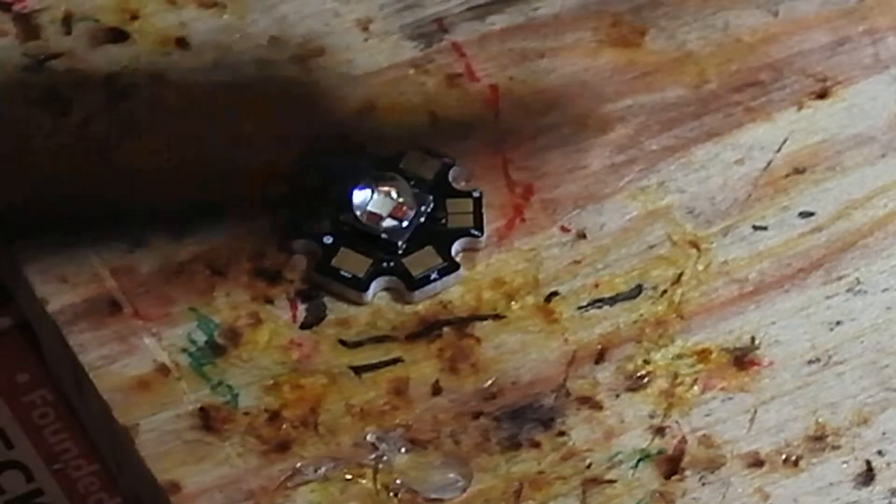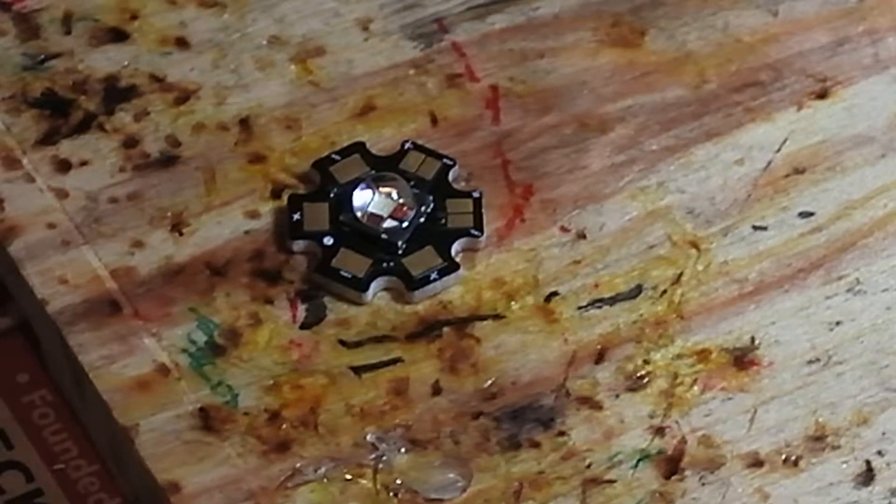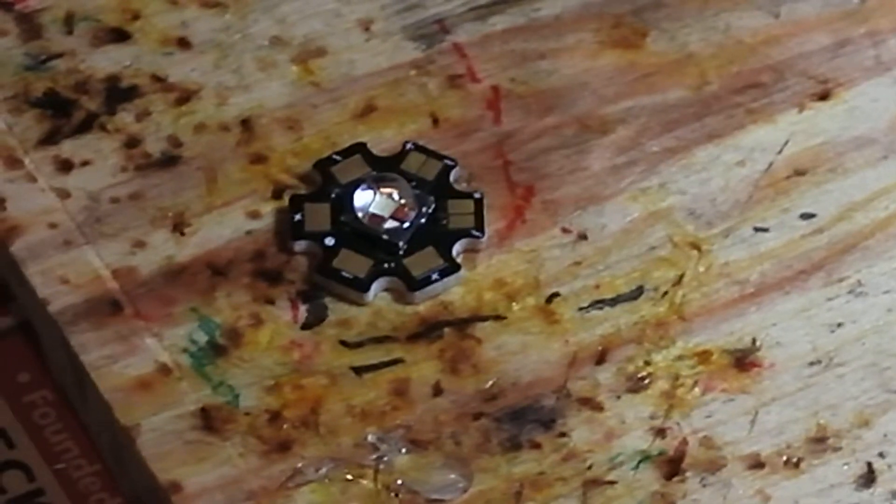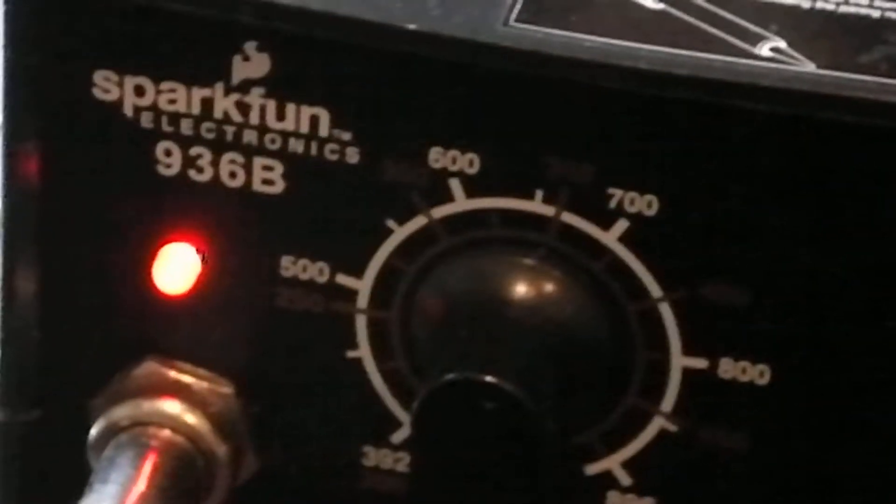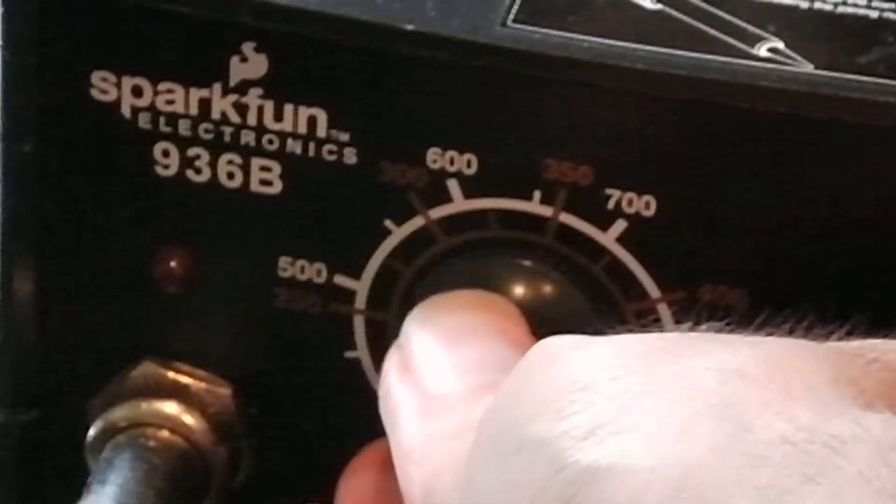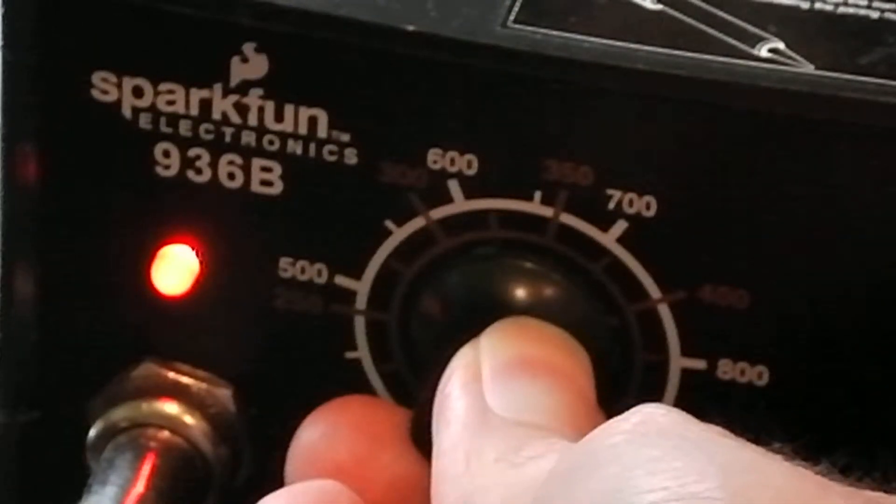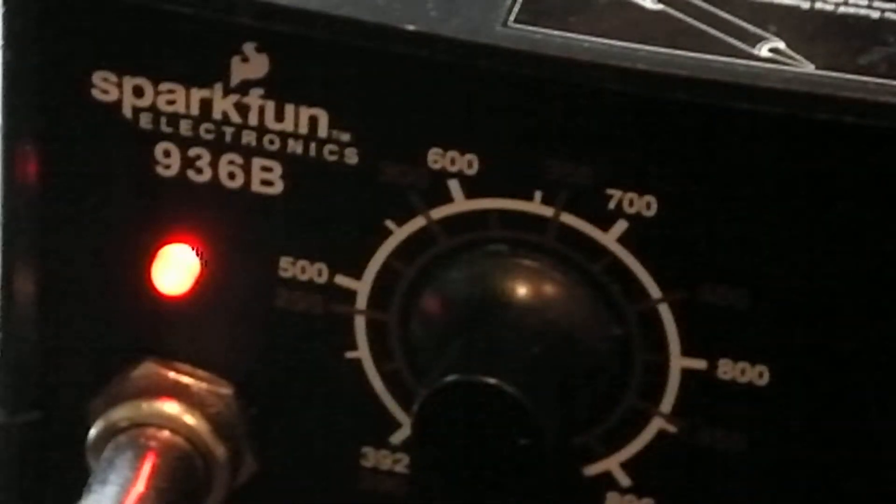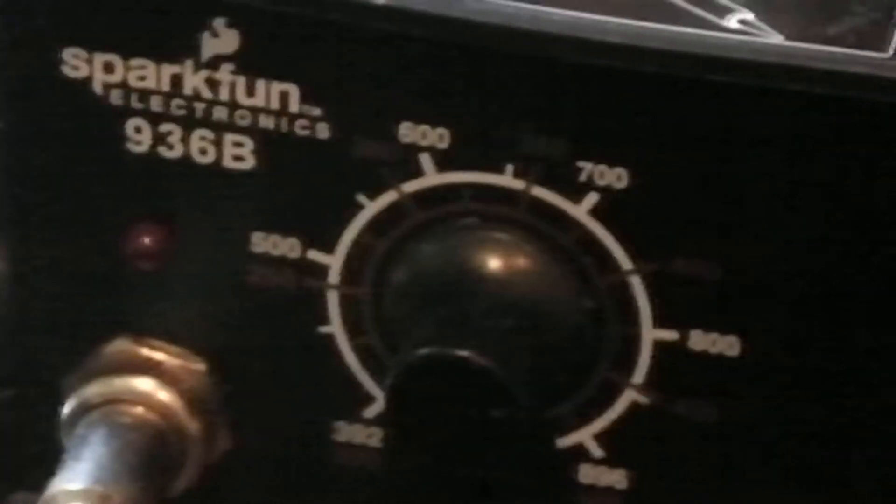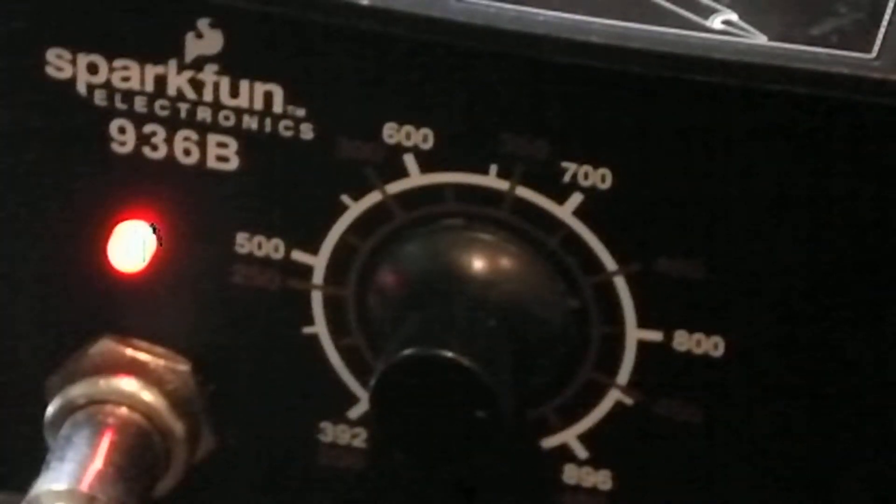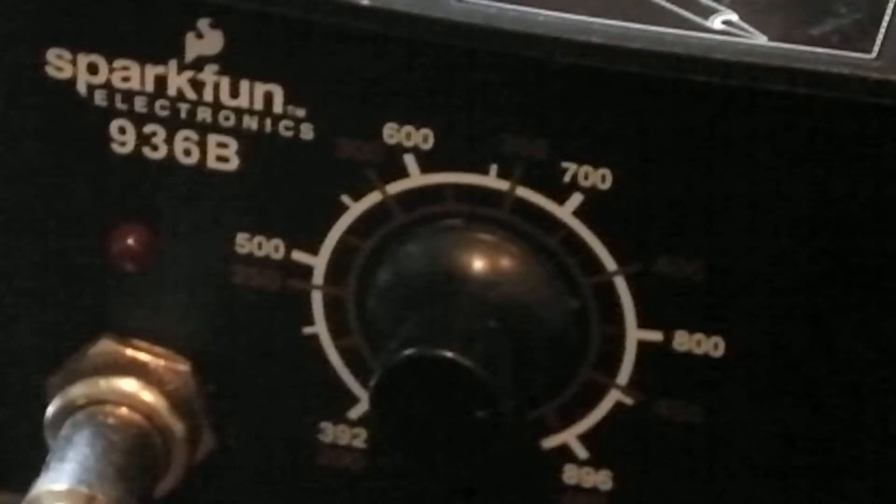The first thing you want to do, and this is why the variable temperature soldering iron is extremely important, is get your temperature set right. I'm going to turn this up really high - just over 400 degrees Celsius. I found this works extremely well for LED engines. Any less than that and you're going to have to hold it there too long, which is not good.